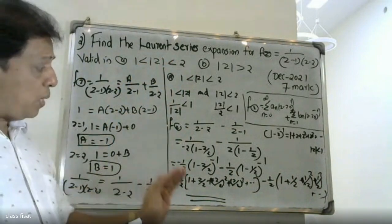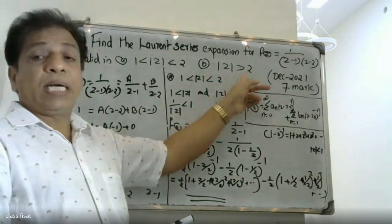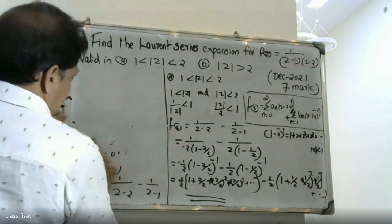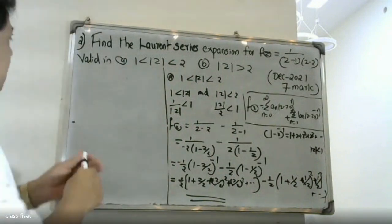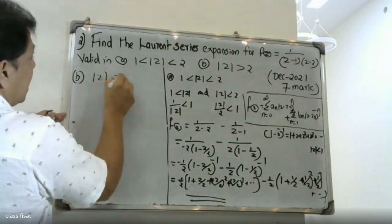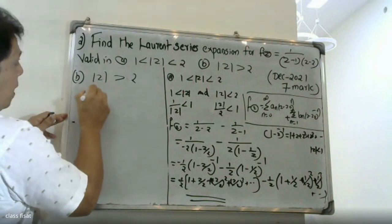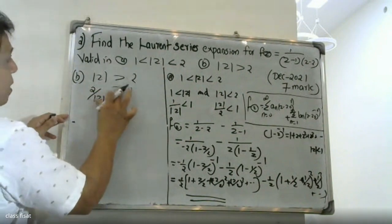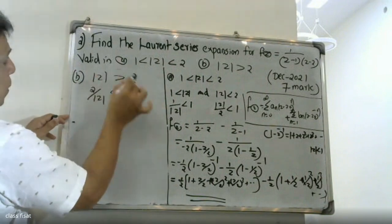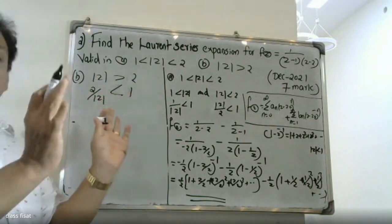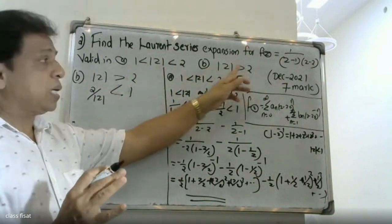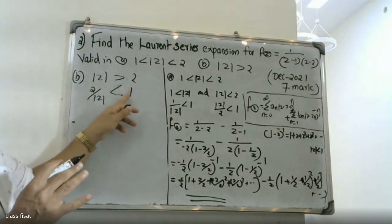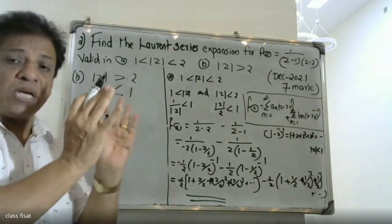Now for region 2, where |z| is greater than 2. Since |z| greater than 2, we have 2 divided by |z| less than 1, meaning 2 by mod z is less than 1. So 1 by mod z is also less than 1. We arrange the function accordingly for this region.